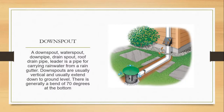Downspout: A downspout — also called a water spout, downpipe, drain spout, roof drain pipe, or leader — is a pipe for carrying rainwater from a rain gutter. Downspouts are usually vertical and extend to the ground level, with a general bend of 70 degrees at the bottom.